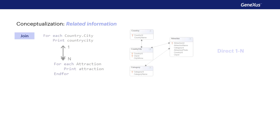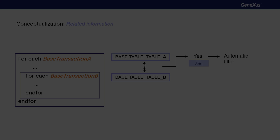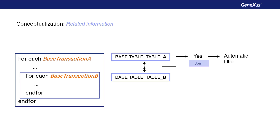We can distinguish two cases of one-to-many relationships between tables. The first is direct: the base tables of the external and nested forEach commands are country, city, and attraction respectively, which are linked by a one-to-many relationship. The second is indirect: the base tables of the external and nested forEach commands are country and attraction, which do not have a direct one-to-many relationship, but they do have an indirect one through the country-city table. In other words, the base table of the first forEach command, country, is included in the extended table of the base table of the nested forEach command, attraction. If no relationship exists, no filter would be applied and all records of the nested forEach would be printed for every record of the external one. This type of nested forEach, where no implicit relationship is found, is called a cartesian product.